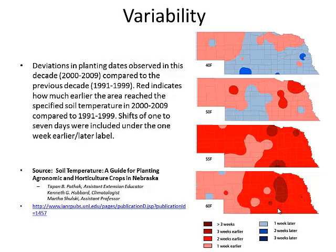This next graph looks at variability — comparing the 2000 to 2009 decade to the 1990 to 1999 decade. By the time we hit 40 degrees soil temperature in our area, it was a week later in the 2000s compared to the 1990s. We hit 50 degrees also about a week later, but when we got to 55 degrees we were actually a week to two weeks earlier — it warmed up faster once it started. The next decade will probably look different, but the NebGuide also goes through how this affects planting dates and varieties.